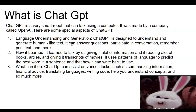How it learned: it learned to talk by being given a lot of information and reading a lot of books, articles, and transcripts of movies. It uses patterns of language to predict the next word in a sentence, and that is how it can write back to you.